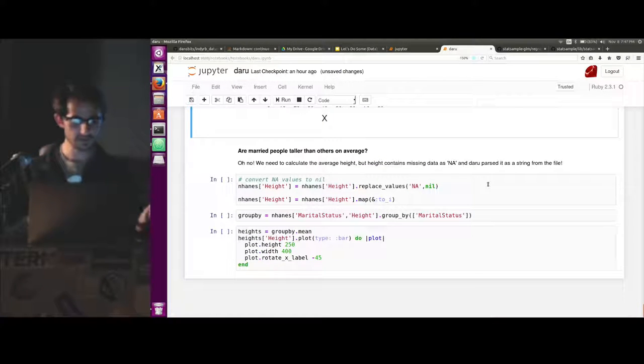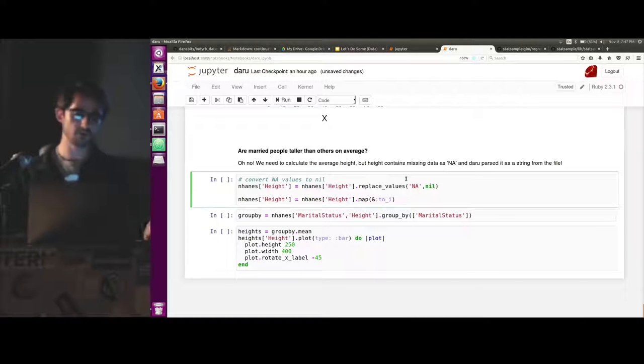And lastly, are married people taller than average or taller than other marital statuses on average? So to do this, we kind of need to group by marital status and then do an average based on that, which there's functionality to do that pretty easily.